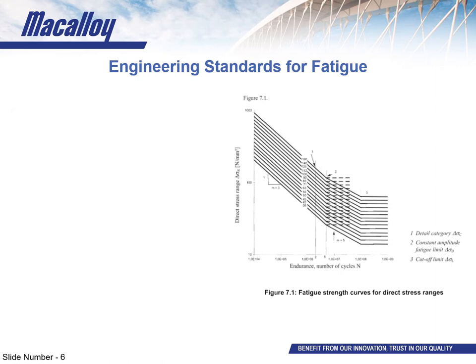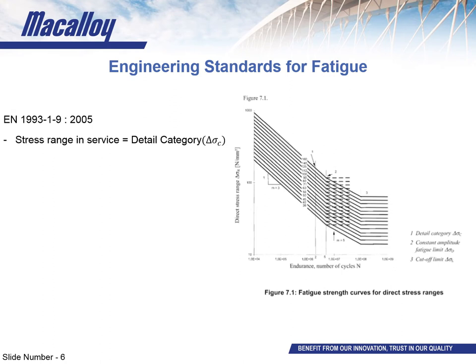Now we'll look at the engineering standards and design codes when you need to consider fatigue. There are two main standards to consider for fatigue in tension rods under European standards. The first is EN 1993 part 1 part 9, which covers fatigue in general for structural steelwork — and this is the more extensive standard for fatigue assessment when it comes to tension rods. Stress range — a key term — is the difference in stress experienced by the material as the load increases and decreases in its fatigue cycles. Once structural checks are performed and the load range is ascertained, it's transferred into a stress range, referred to as the detail category, which is used in all theoretical work going forward.